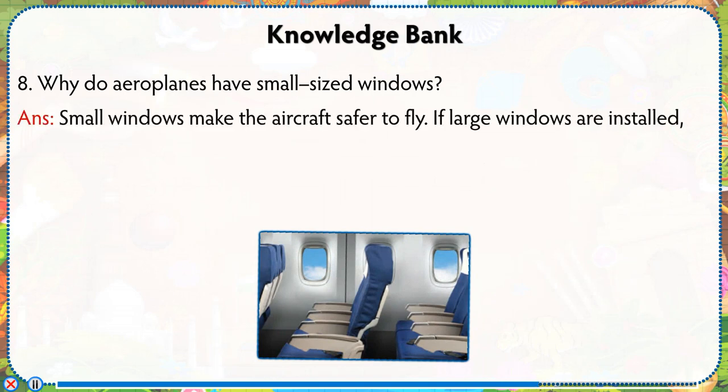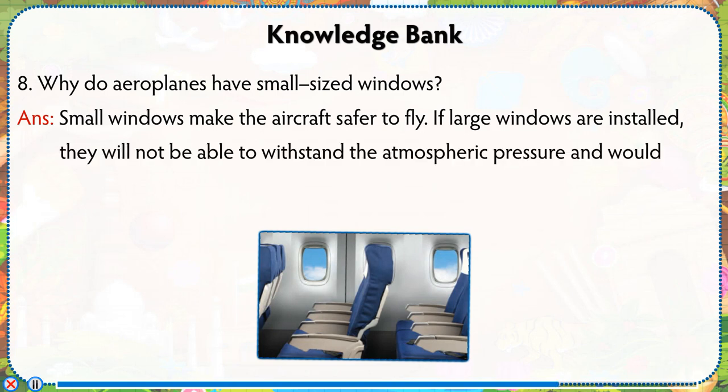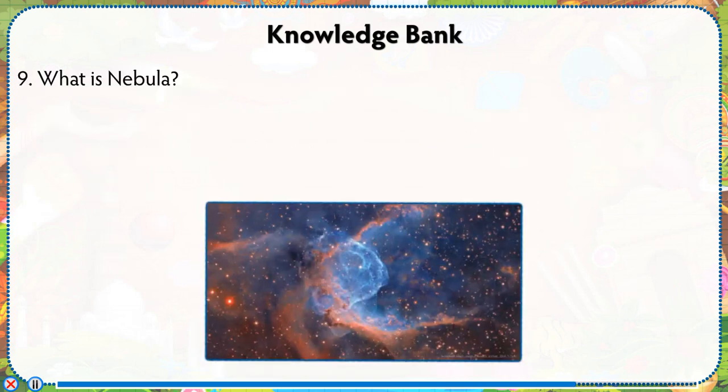Why do aeroplanes have small-sized windows? Small windows make the aircraft safer to fly. If large windows were installed, they would not be able to withstand the atmospheric pressure and would break easily.